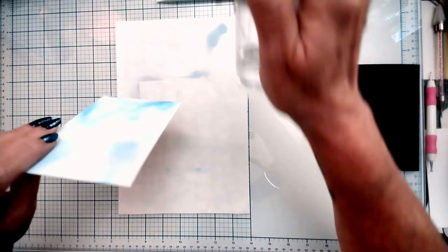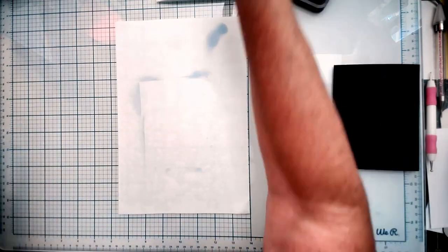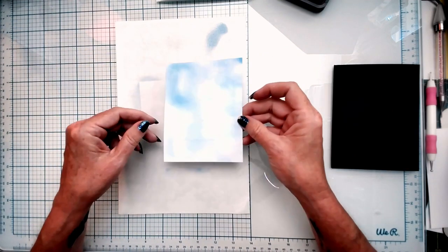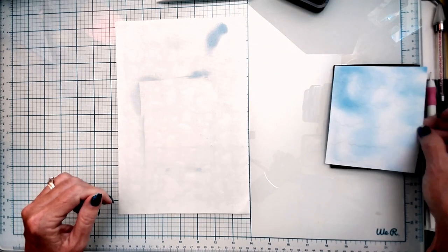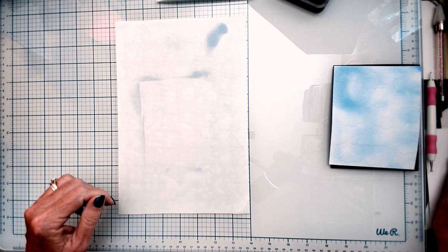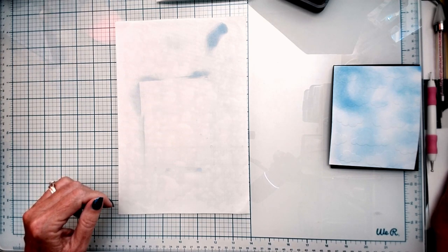One of the things that really helps with embossing is to spray your cardstock before placing it into your embossing folder and running it through the machine. This allows the fibers of the paper to just relax. As it runs through the machine, they will push into the grooves of the folder and you will have a more even spread on your embossing. They'll go deeper and it's just so beautiful.